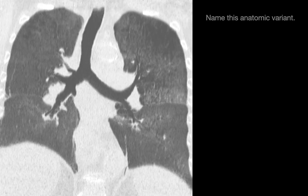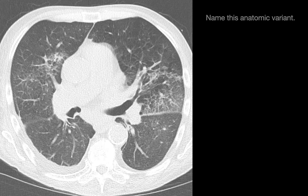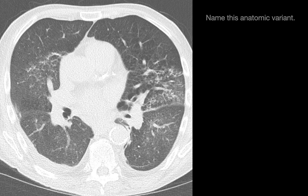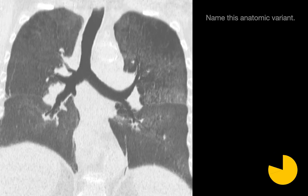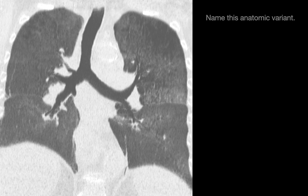Name this anatomic variant. The anatomic variant here is circled in magenta. We have a blind-ending, short bronchus arising from the inferior surface of the bronchus intermedius. This is an accessory cardiac bronchus.